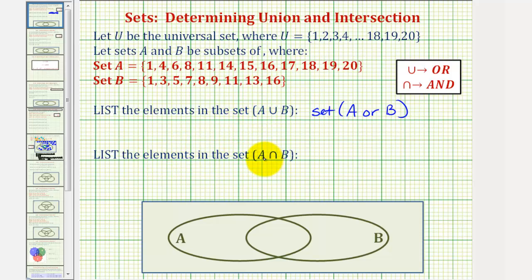And for the set A intersect B, intersection means and, so we're looking for the elements in set A and in set B.